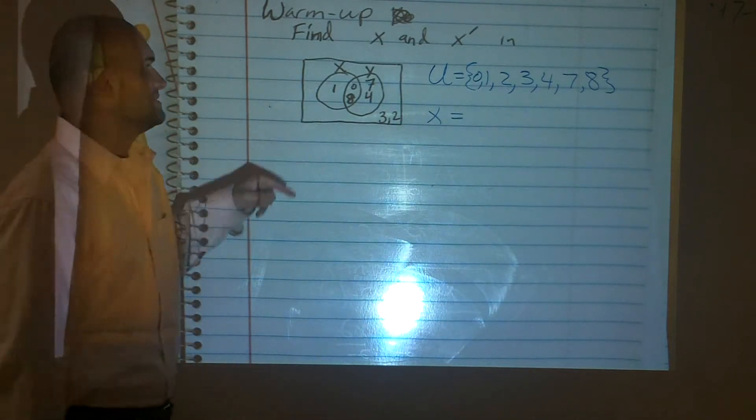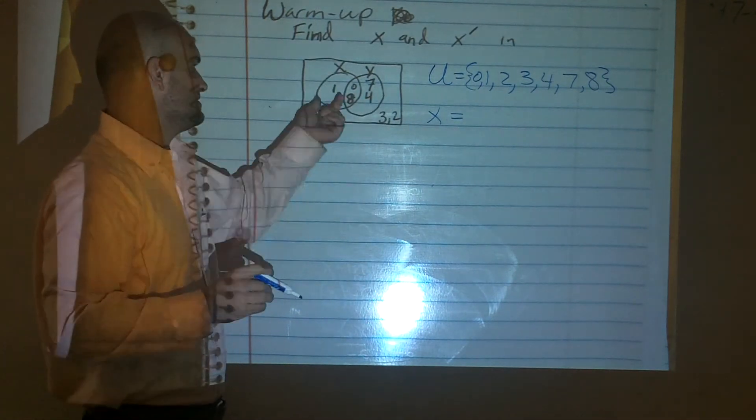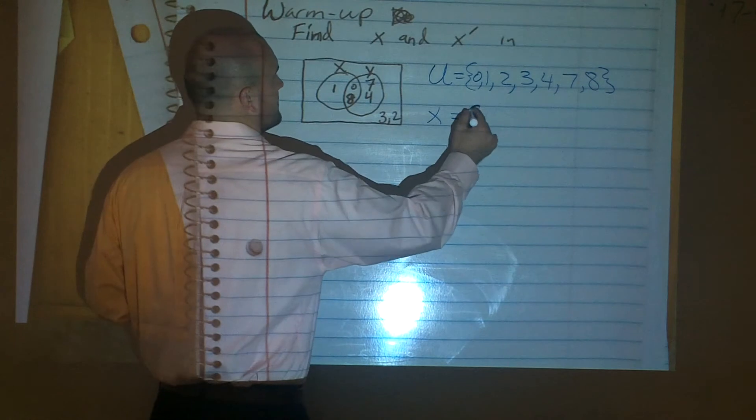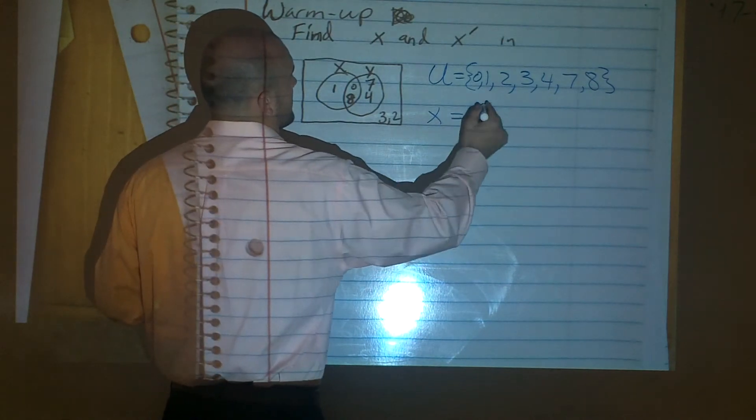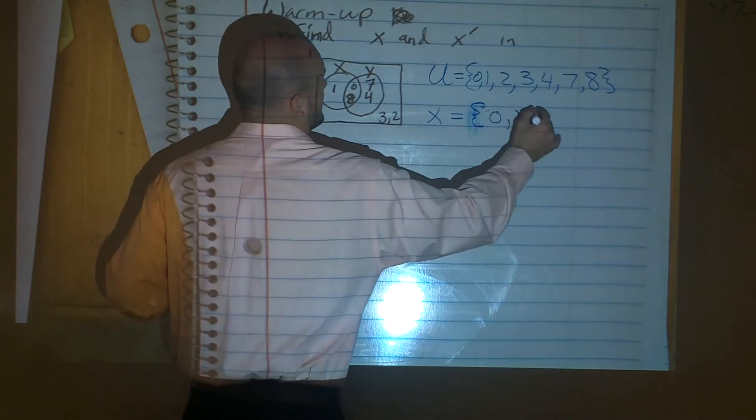So now, if I want to find what my x set is, my x is everything that's inside that x circle. Everything that's inside that circle. So therefore, it's going to be 1, 0, 8. We're going to have 0, 1, and 8.